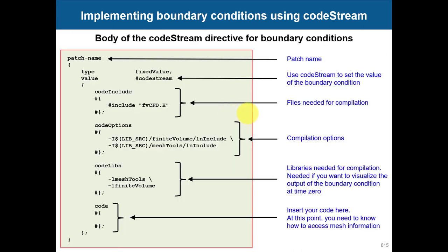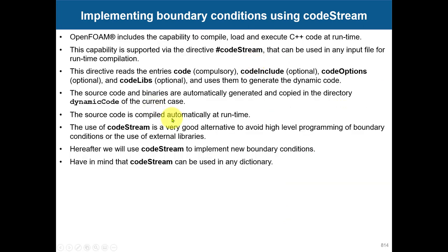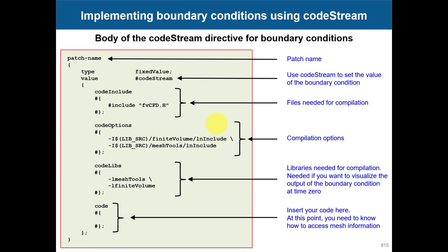codeStream can be used in any dictionary, any input file in OpenFOAM, but here we're going to focus on boundary conditions. You choose your patch name and then apply this template. For example, if you want to use a fixedValue boundary condition, where you would normally put a value of one or a vector like (1 1 1), instead you use the codeStream directive.